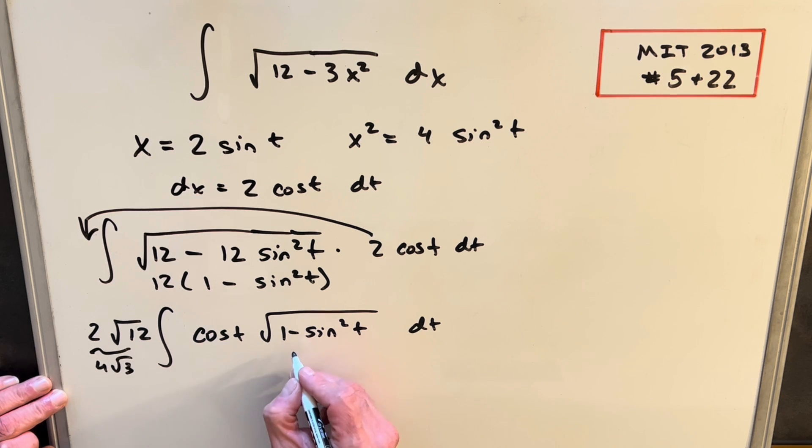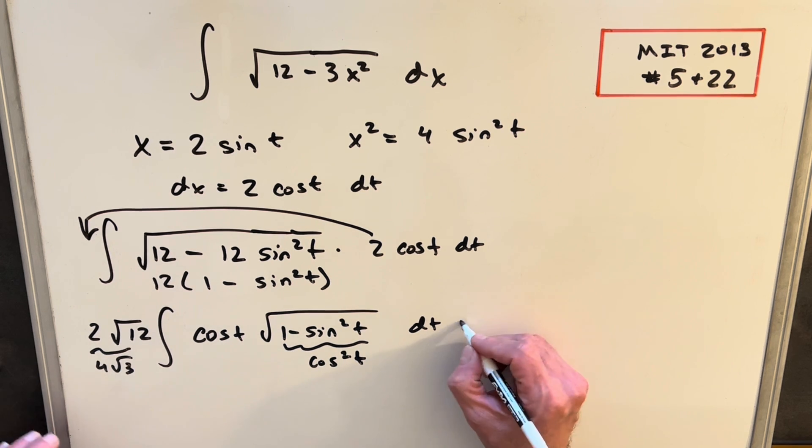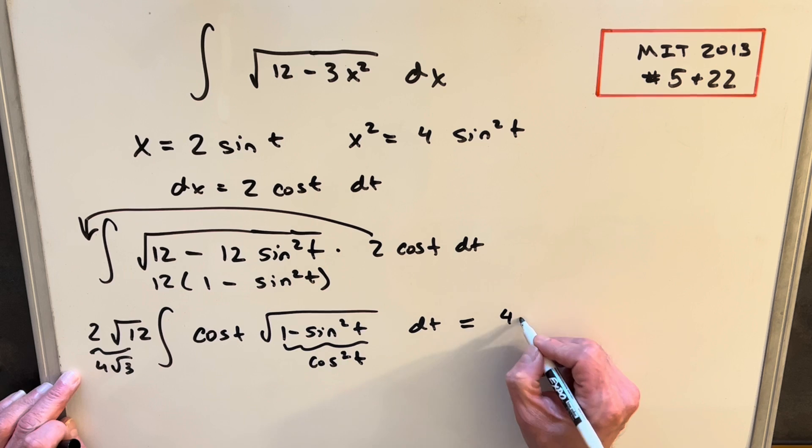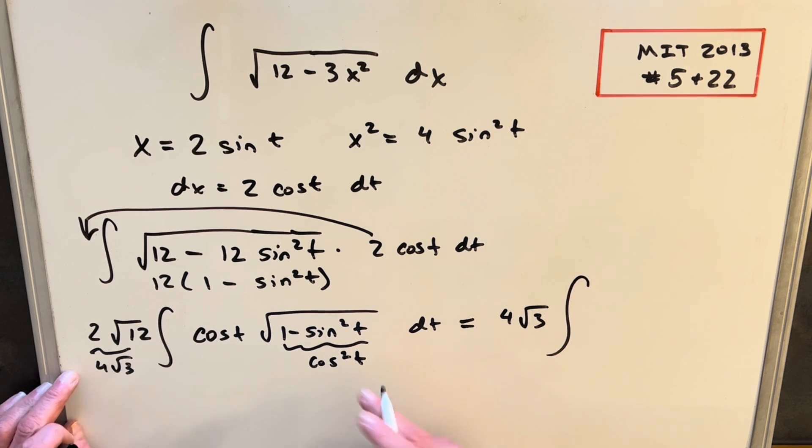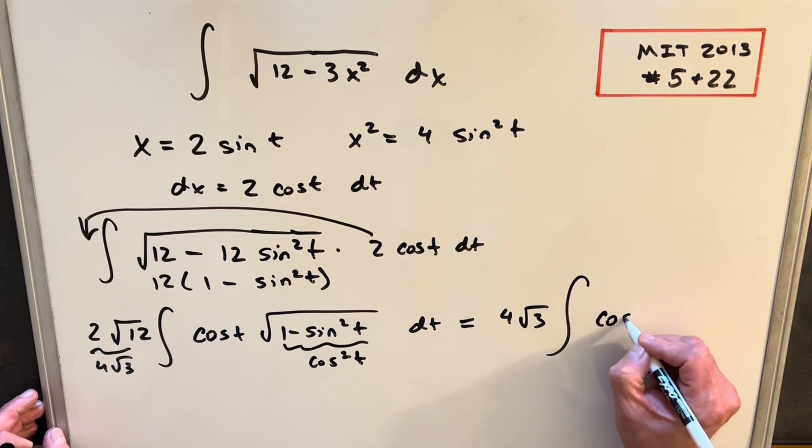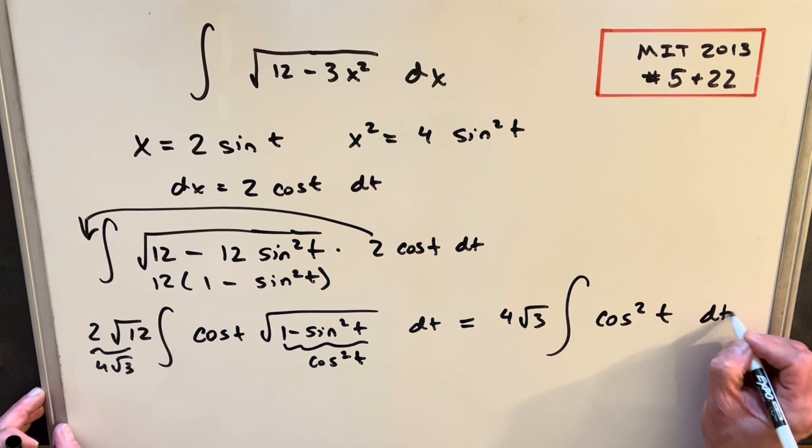And then this, 1 minus sine squared t, is actually just cosine squared t. Inside the square root, that's just going to be cosine t. So when we write this whole thing, we're going to have 4 square root of 3. Cosine times cosine here is going to be cosine squared t dt.